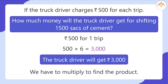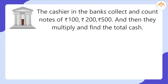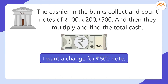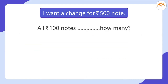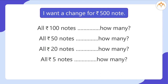We have to multiply to find the product. We always use multiplication and division in our daily life. The cashiers in banks collect and count notes of rupees 100, rupees 200, rupees 500, and then they multiply to find the total cash. Now I have a note of rupees 500 and I want change — all 100 rupee notes: how many? All 50 rupee notes: how many? All 20 rupee notes: how many? All 5 rupee notes: how many?